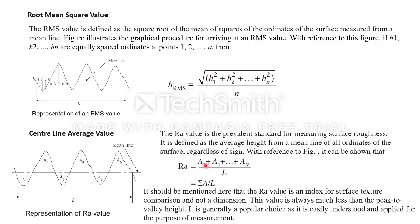From the figure we can say that Ra is equal to A1 to AN divided by N. It should be mentioned here that Ra value is an index for surface texture comparison, not a dimension. Ra value is a comparative value, it is dimensionless. This value is always much lesser than the peak to valley height. The peak to valley height will give an exact value, but here it will give a comparative representative value. It is generally a popular choice as it is easily understood and applied for the purpose of measurement.